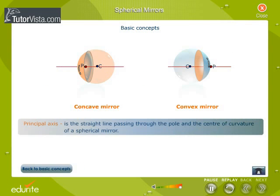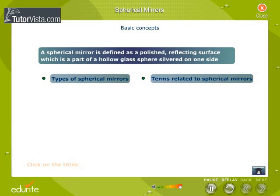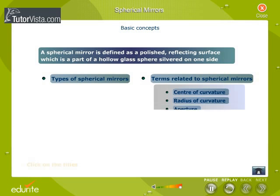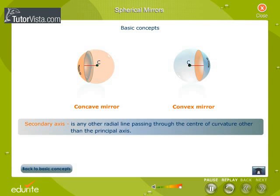The principal axis is the straight line passing through the pole and the center of curvature of a spherical mirror. Secondary axis is any other radial line passing through the center of curvature other than the principal axis.